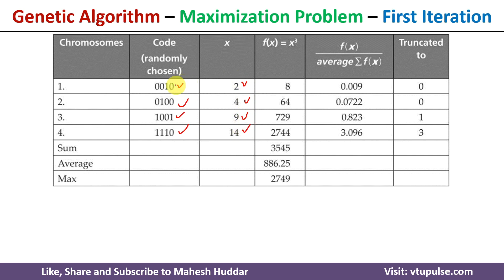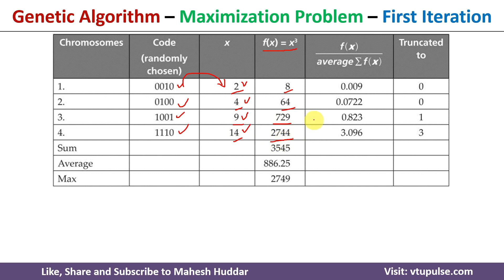Once you select the chromosomes randomly, we need to convert those chromosomes into decimal values. Once you get the decimal values, we need to apply the function and calculate f(x) = x³. If x = 2, you get 8. If x = 4, you get 64. If x = 9, you get 729. If x = 14, you get 2744.